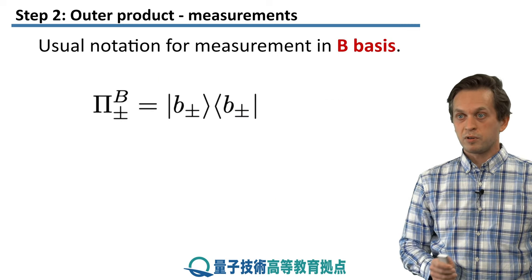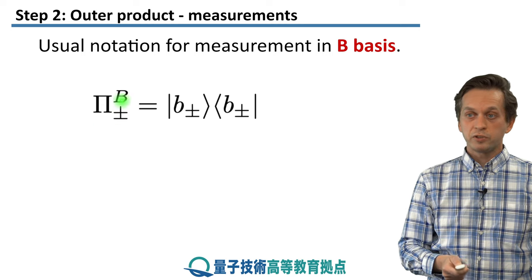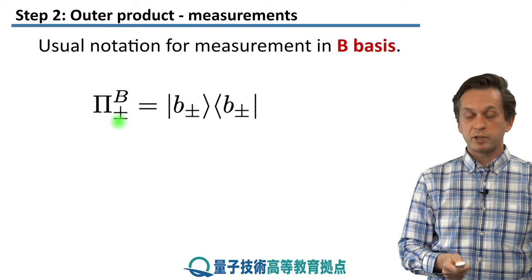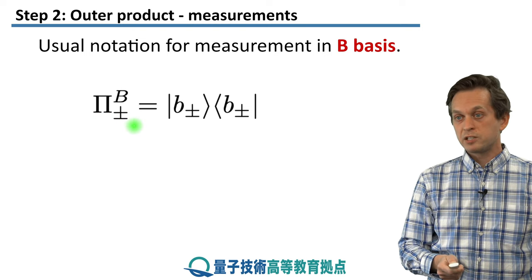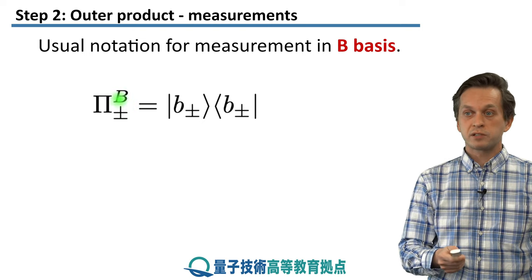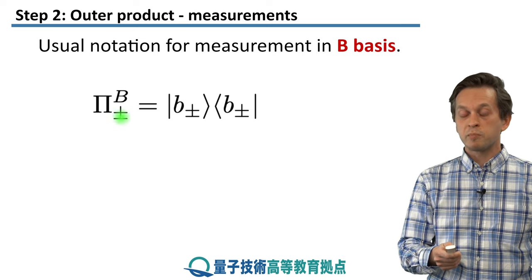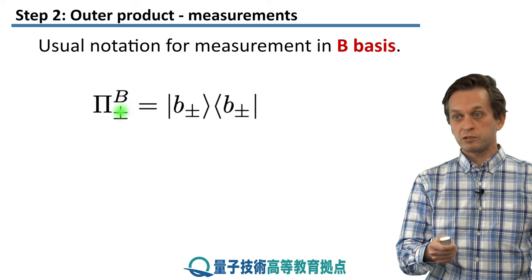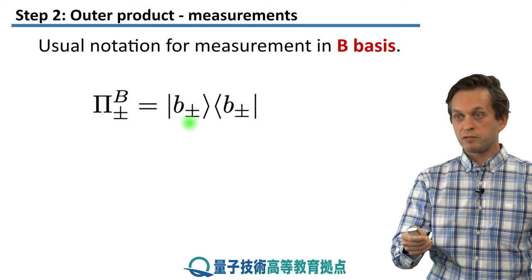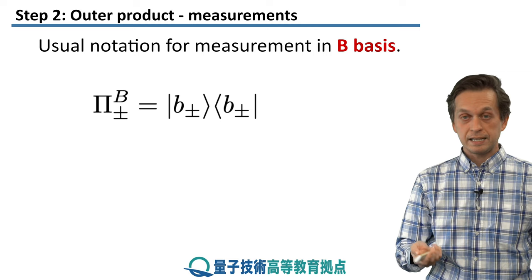So this is a point of notation, but it's very, very useful to be aware of how we actually write down these projection operators. Often in books or in other works and in papers, you will see that we designate the projector with a capital Greek letter pi. And just to be clear, we also tend to write down the basis in which we are measuring. Here I'm writing it down in terms of some capital B. It can be any basis that you want. And we also indicate which measurement outcome the projector corresponds to. Is it the plus outcome or is it the minus outcome? So, for example, if I have pi B plus, then I write down the ket for that basis vector B plus forming outer product with itself. And in the same way with the minus.